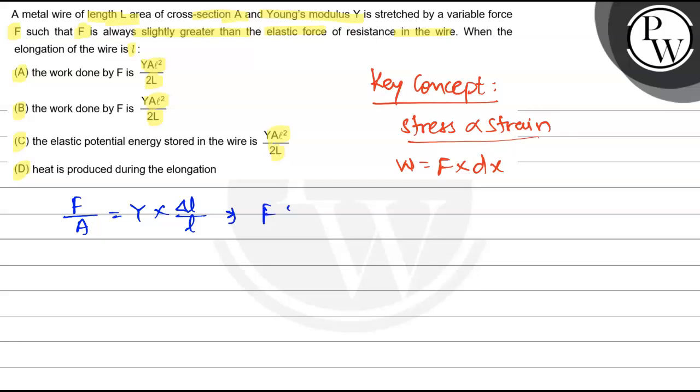So for work done, work done equals force times displacement dx. So F we can expand as YA x by capital L. Now for a small displacement dx, dW equals F dx equals YA/L x dx.